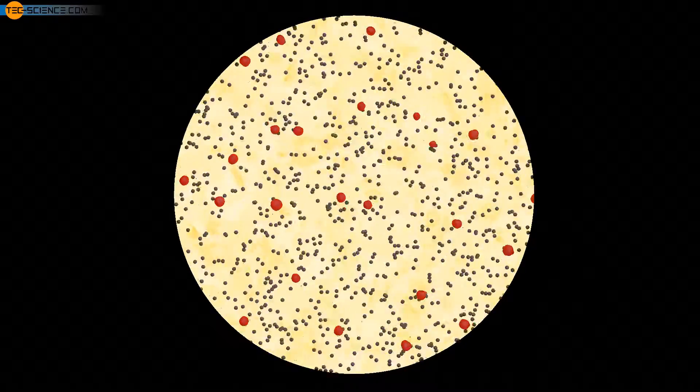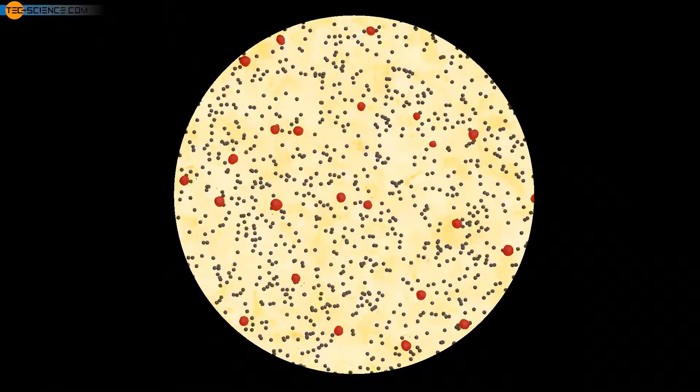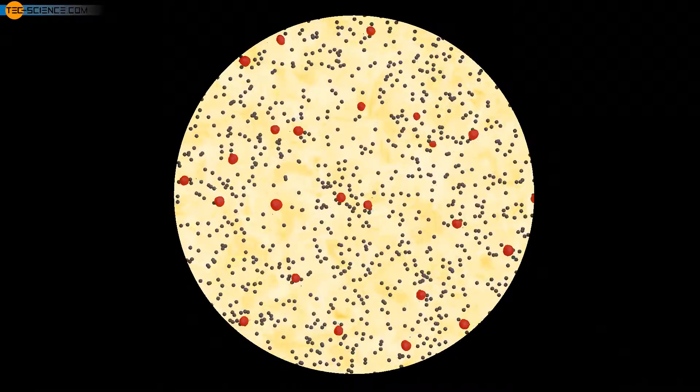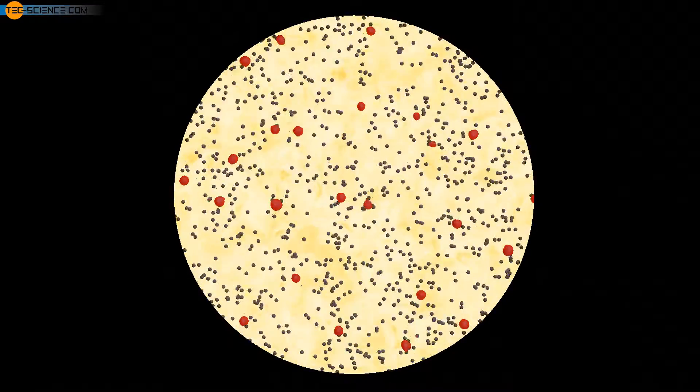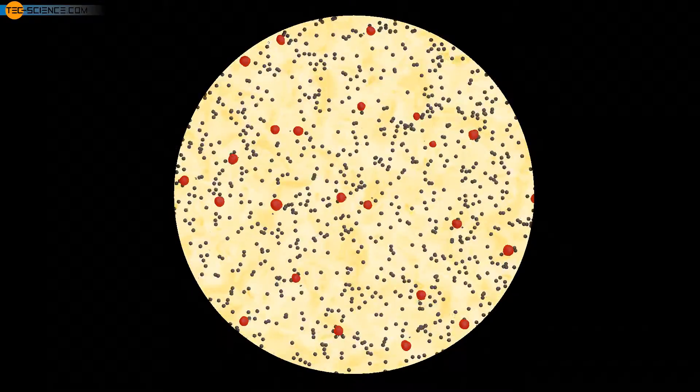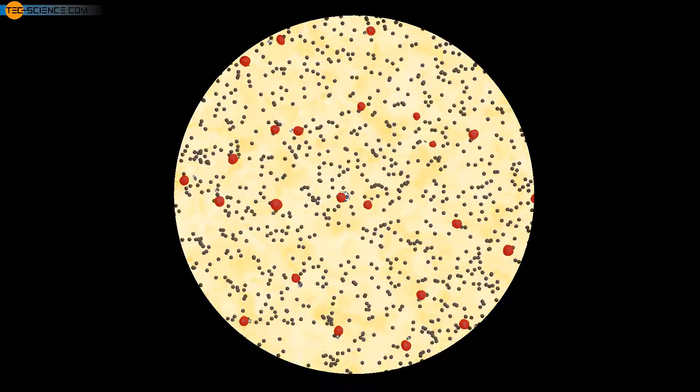If stable nuclei form in the supercooled melt, solidification begins. With the release of heat, also called heat of solidification, further atoms from the melt attach themselves to the emerging lattice structure. The nucleus begins to grow and initiates the phase of nucleus growth or crystal growth.